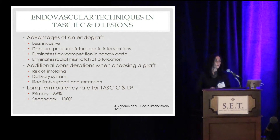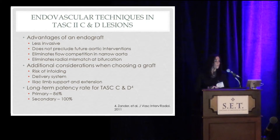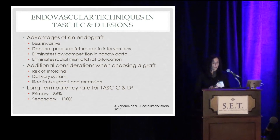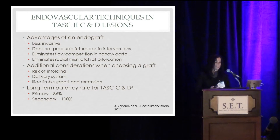When choosing an endograft, there have been some publications — although few and far between — regarding endograft use for aorto-iliac occlusive disease using various grafts. Considerations include the risk of infolding of the graft, compression of either iliac limb, the ability to provide support through limb extensions, the ability to extend further into the common iliac if needed, and using low-profile delivery systems. In one study looking at long-term patency at eight years for endograft use in aorto-iliac disease, they found a primary patency of 86% and a secondary patency of 100%.